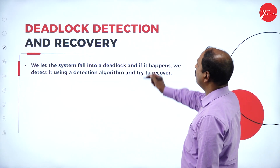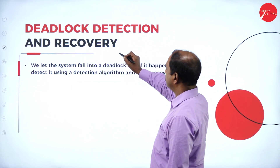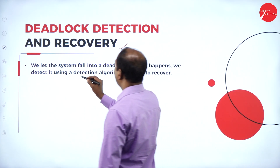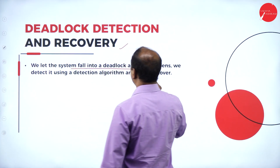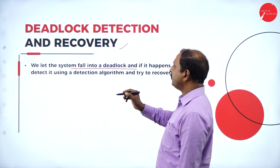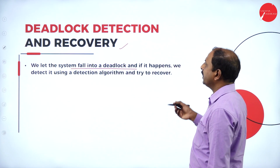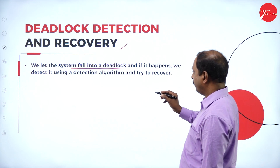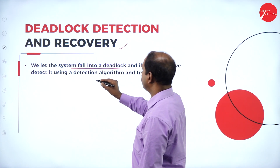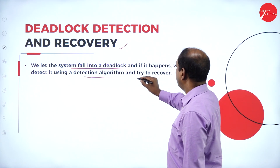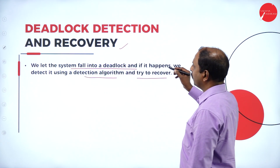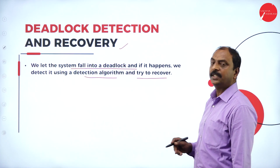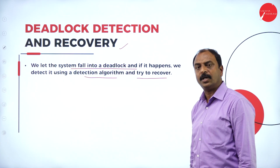The next method is deadlock detection and recovery. When the system falls into a deadlock situation, it is possible to recover by using a detection and recovery algorithm. This must be done through a proper algorithm.